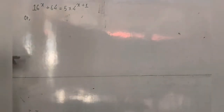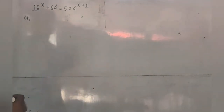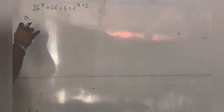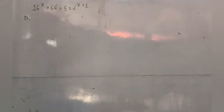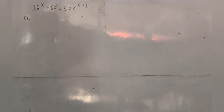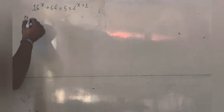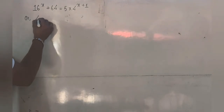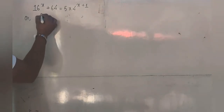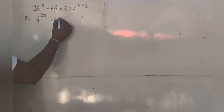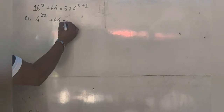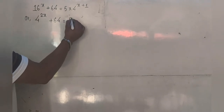Here you have 16 to the power of x. We all know that 16 is the square of 4. So in place of 16, we can write 4 squared. In place of 16, I can write 4 squared. So x remains as it is, and 64 is also as it is.